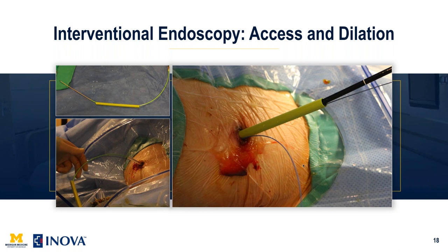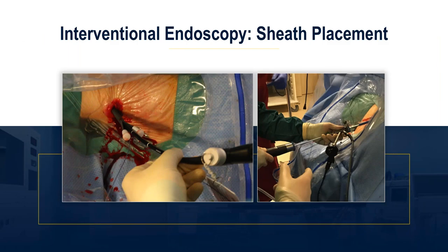If using the rigid endoscope, since it's 22.5 French, you need a larger sheath. The Bard X-Force balloon — a urology balloon — comes with a plastic cannula. You use this balloon to dilate the tract, place the plastic cannula, and then place the endoscope through the cannula. Images show the flexible endoscope through the peel-away sheath on the left, and the rigid endoscope with a lithotriptor device and the plastic cannula from the Bard X-Force balloon on the right.